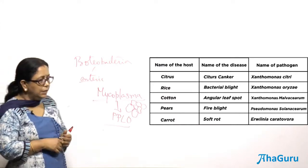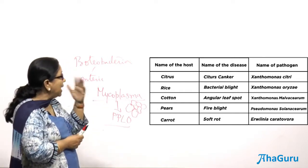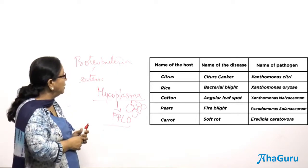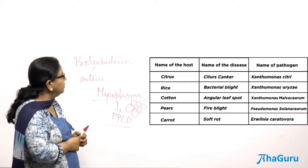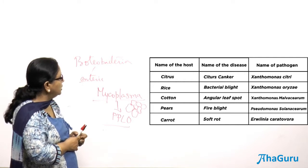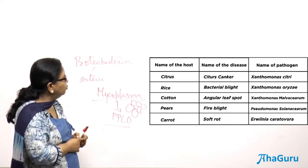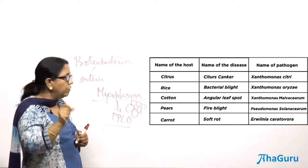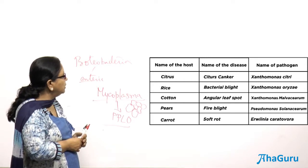Some bacterial diseases in plants include: citrus canker, caused by Xanthomonas citri; bacterial blight of rice, caused by Xanthomonas oryzae; angular leaf spot of cotton, caused by Xanthomonas malvacearum; fire blight of pear fruit, caused by Pseudomonas; and soft rot of carrot, where the tissue becomes very soft, caused by Erwinia.